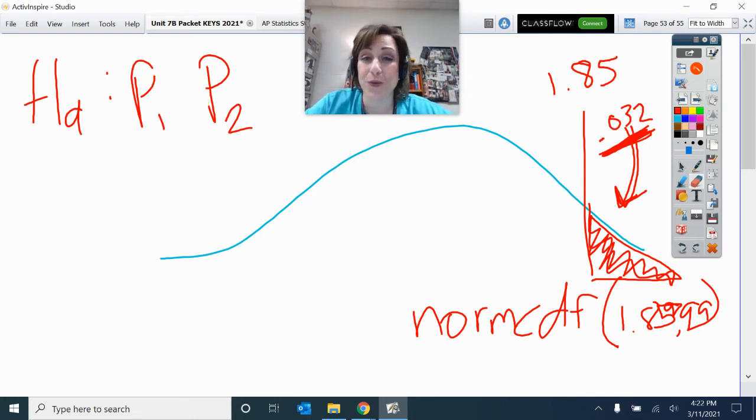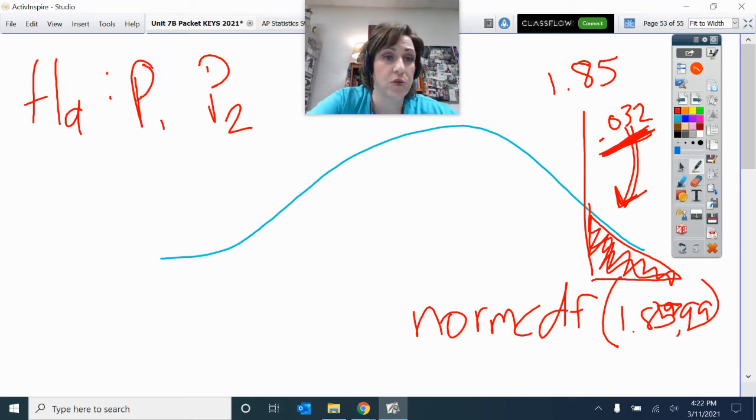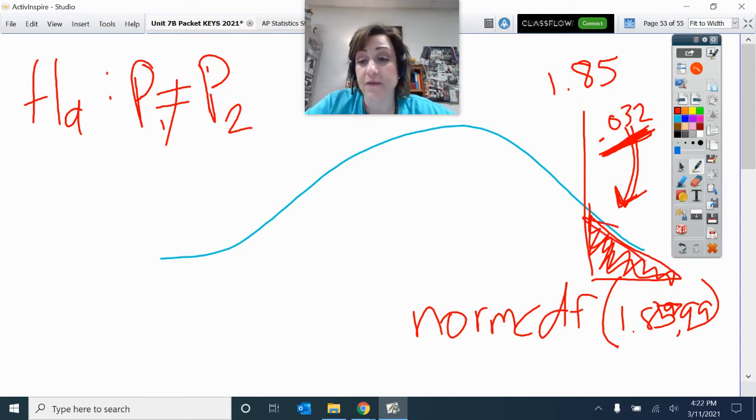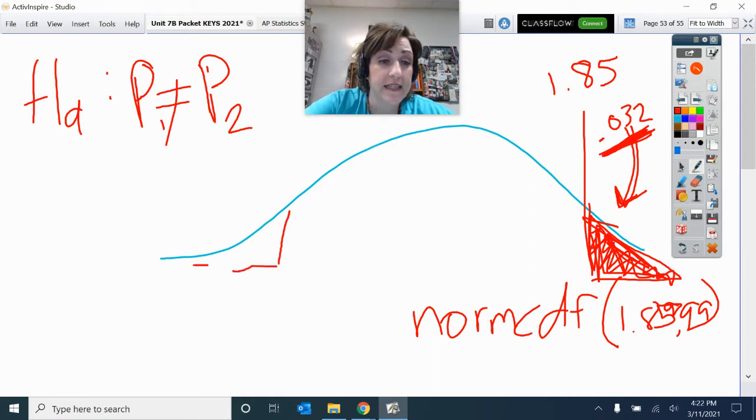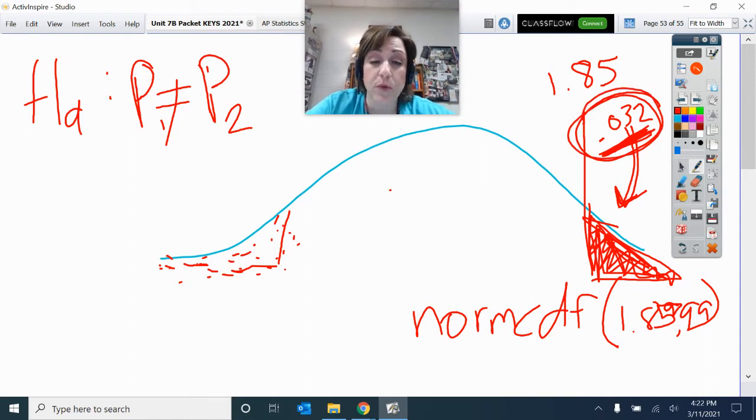Being two-tailed, not equal to, tells me that I do not have just this one tail's worth of p-value. I've got two tails worth of p-value. So I need to take that 0.032 for the upper tail and multiply it by 2 to get the total p-value for two tails, which is 0.064.